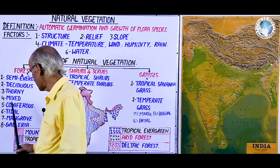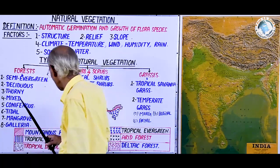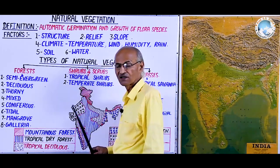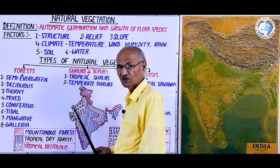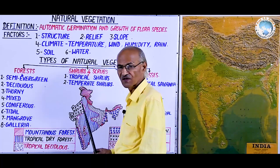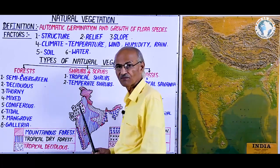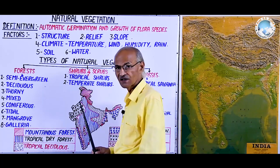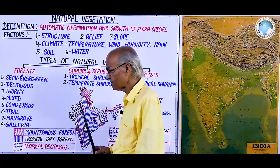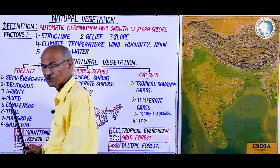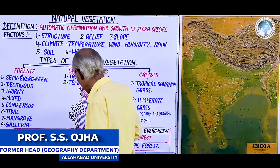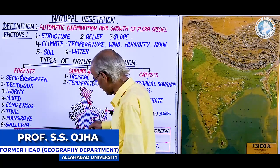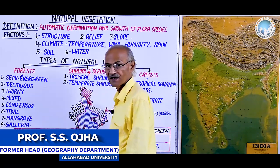Mixed forest is very valuable because both hard and soft wood are found, making it the best forest for the furniture industry. Next is coniferous forest. Moving further north into the Himalayan region, you find coniferous forest with species like spruce and silver fir on the Middle Himalayas and the southern slopes of the Greater Himalayas. These forests over mountain brown soil are significant for soft wood used in match, iron, paper, and pulp industries. Thus, from south to north, the belts are: semi-evergreen, deciduous, thorny, mixed, and then coniferous forest in the Himalayan region.